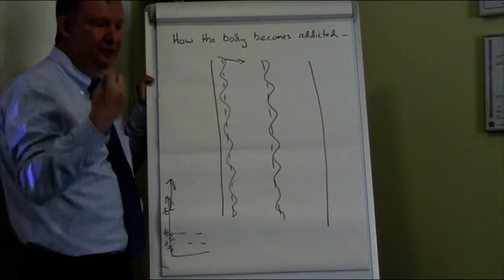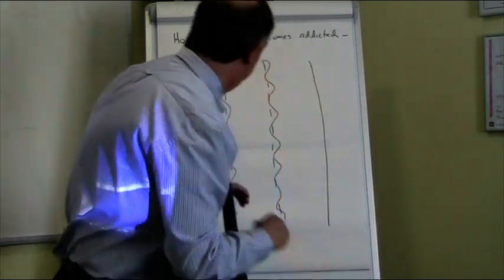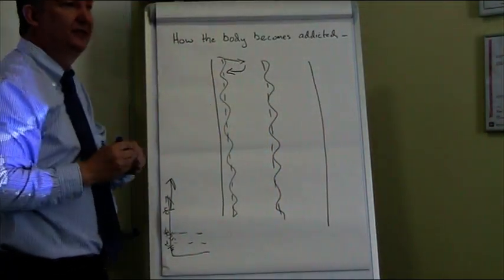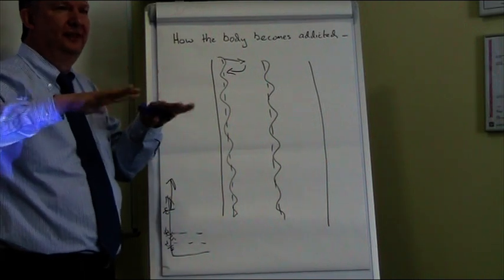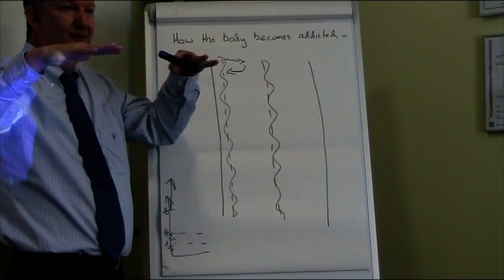If you give an alcoholic a drink or you give a drug addict a drug, what happens is they'll come back, back there. So for alcoholics and drug addicts, they might be shaking because it's going that way. But as soon as you give them the drug, they stop shaking.